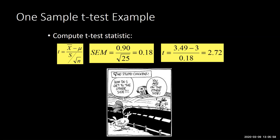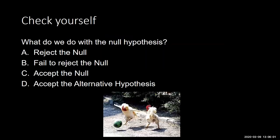Now we want to see where 2.72 falls in our rejection region. Our rejection region was 1.711 or higher. The options are: reject the null, fail to reject the null, accept the null, or accept the alternative. C and D are never right — I will never allow you to say accept the null or accept the alternative. The only two valid answers are reject the null or fail to reject the null. Since 2.72 is higher than the 1.711 cutoff, we reject the null.